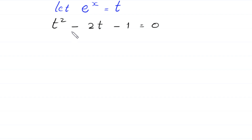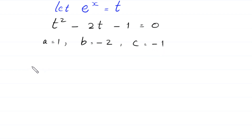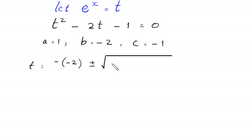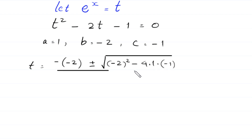Now, this is a quadratic equation and is not factorable. So we solve it by the quadratic formula. In this equation, a is equal to 1, b is equal to negative 2, and c is equal to negative 1. According to the quadratic formula, t equals negative b plus or minus square root of b squared minus 4 times a times c, divided by 2 times a.